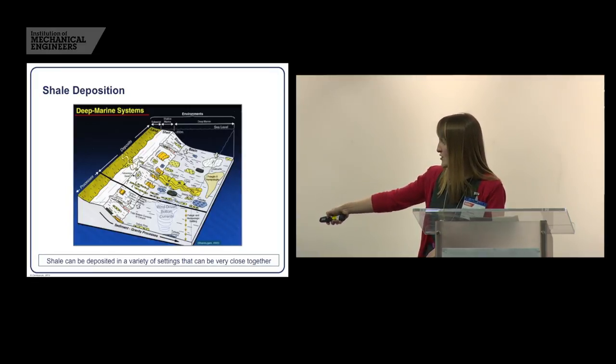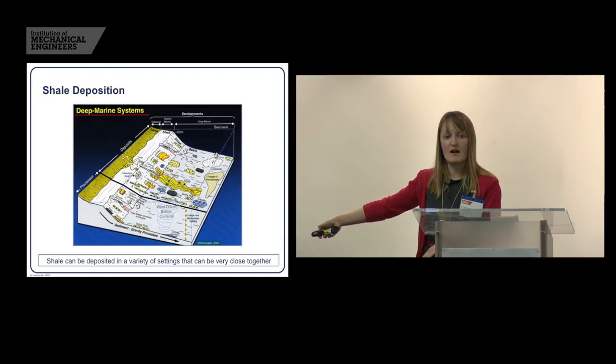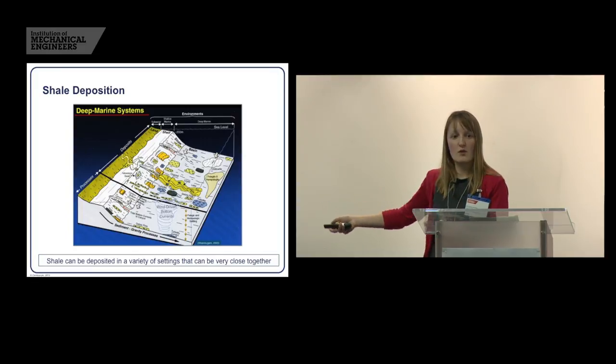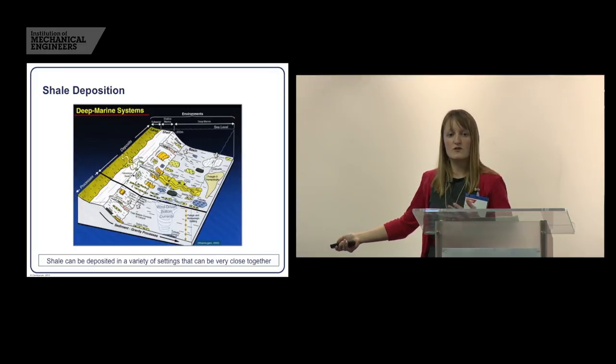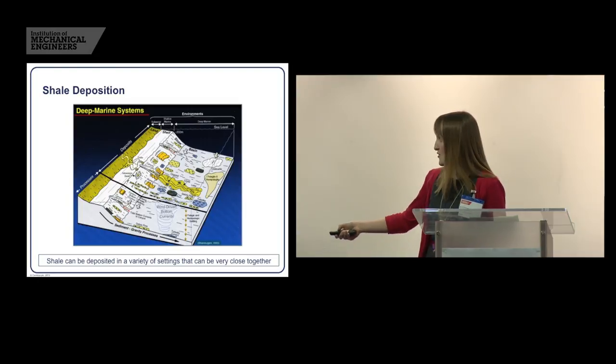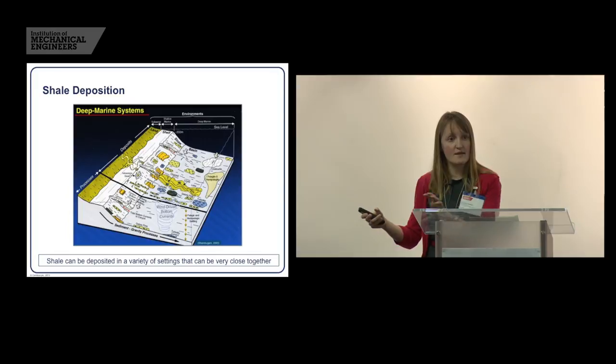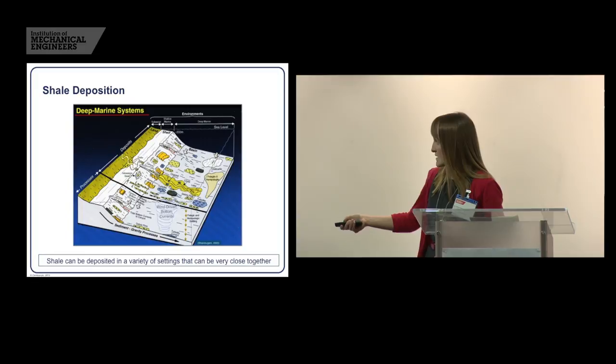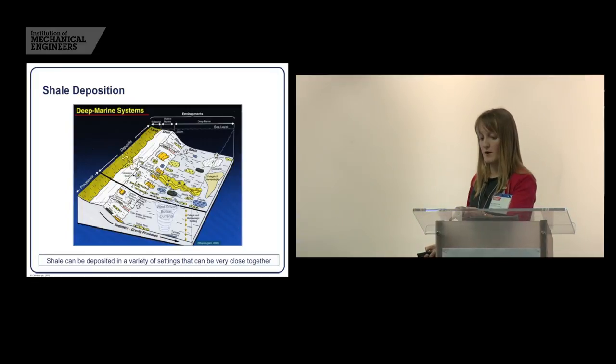But if you look along here, that's not all that's happening in that environment. You've got sediments coming off these slopes and being deposited down here. You've got varying things happening along here. And that can happen over a couple of hundred meters, kilometers. We're drilling horizontal wells that might go on for two kilometers. So the chances of having exactly the same rock along that whole length is difficult. So that's a challenge that we have to overcome and be prepared for when we're drilling.